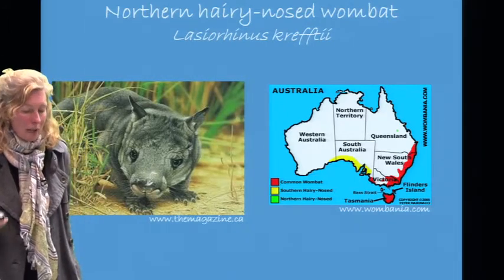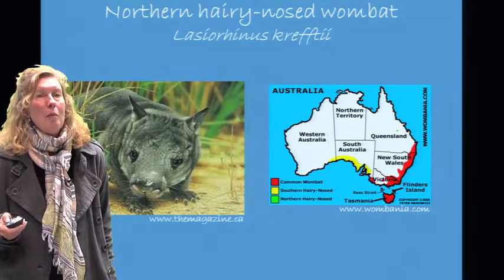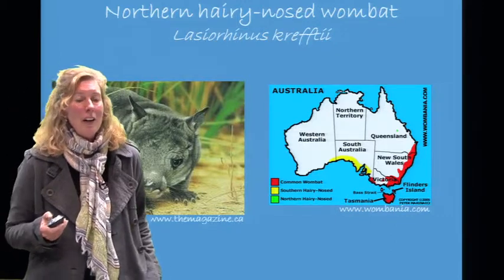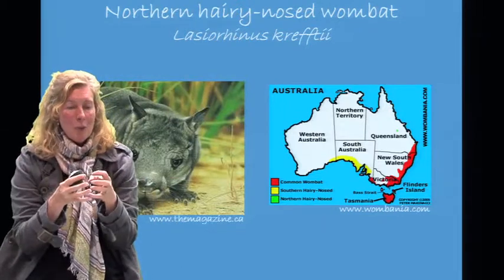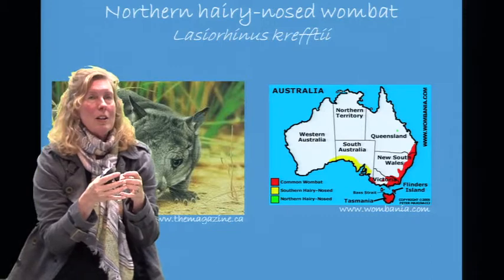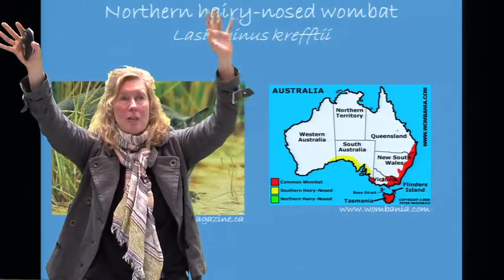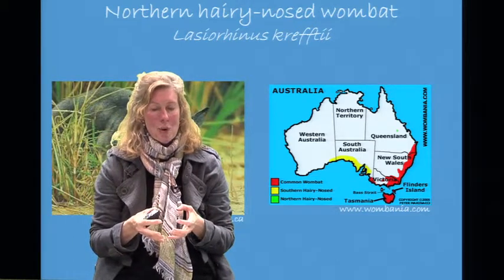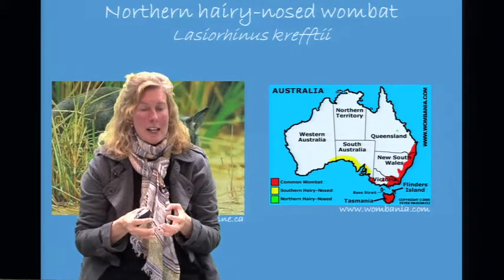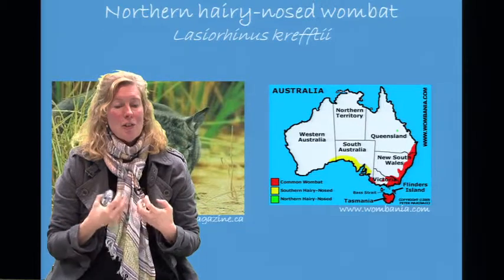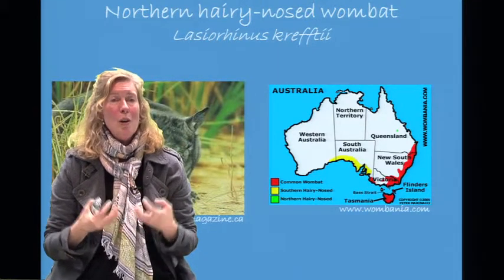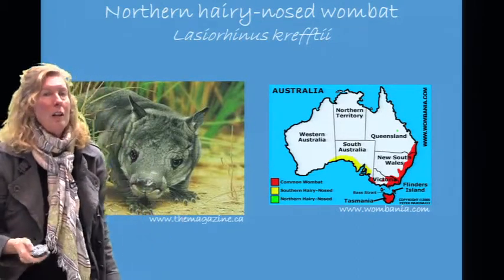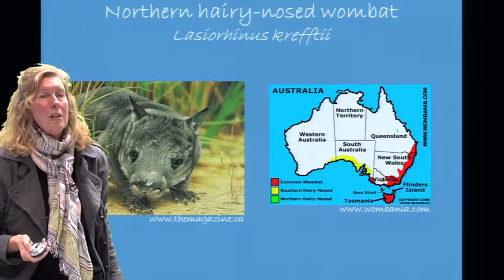The northern hairy-nosed wombat is a great example of a species with low genetic diversity. In 1981, the wombats were reduced to 20 individuals. Imagine a large population with red-eyed, green-eyed, blue-eyed, and yellow-eyed wombats — through that bottleneck of 20, you might end up with only red-eyed wombats. If the blue-eyed wombats had been more adaptable to climate change, for example, we would have lost that gene forever. With low genetic diversity, it's very difficult to adapt to changing conditions.